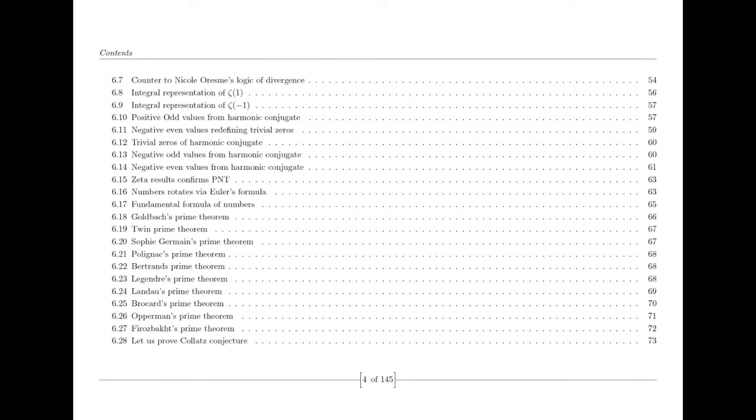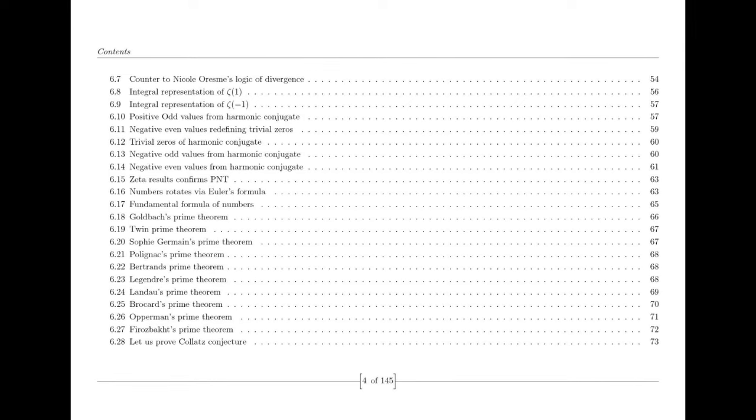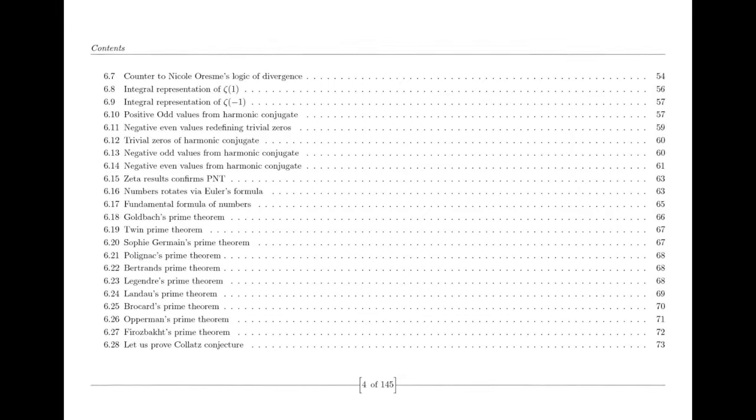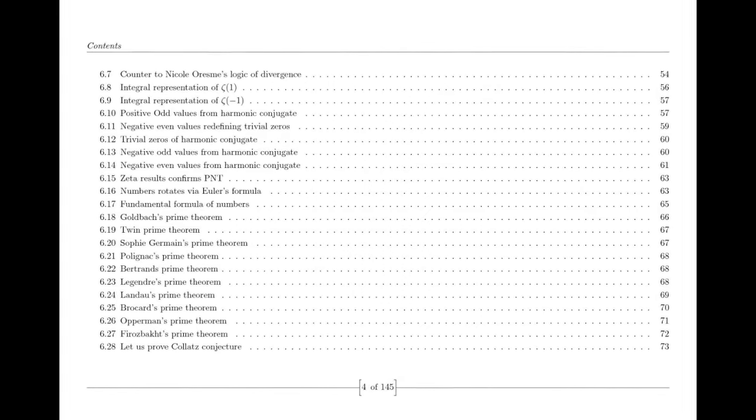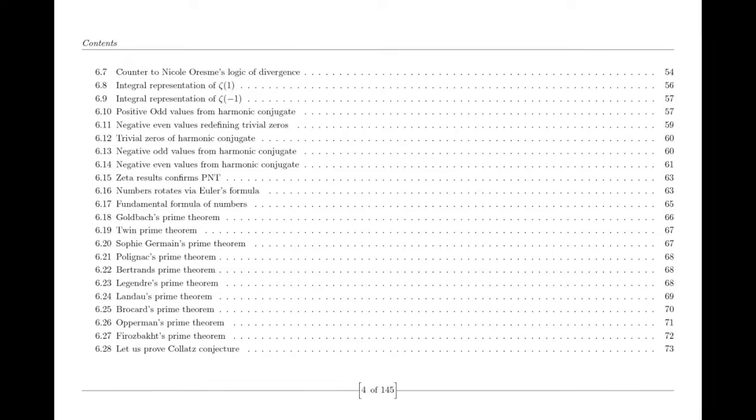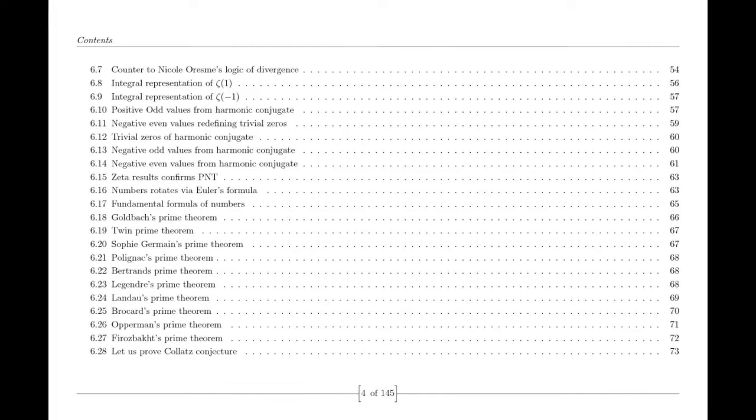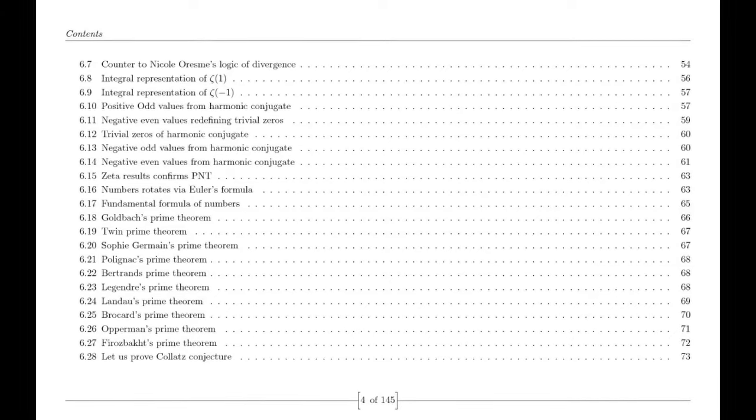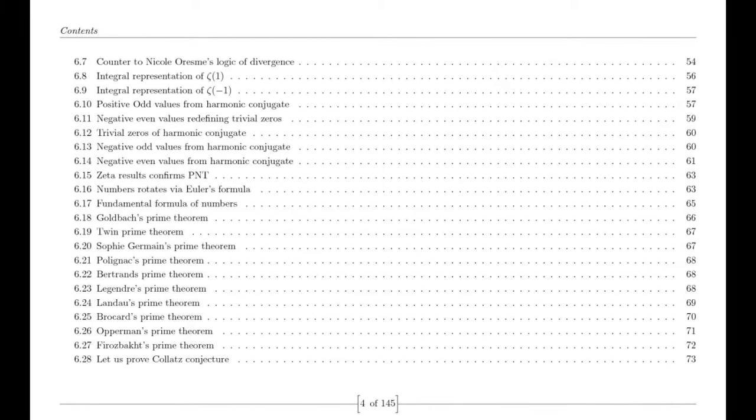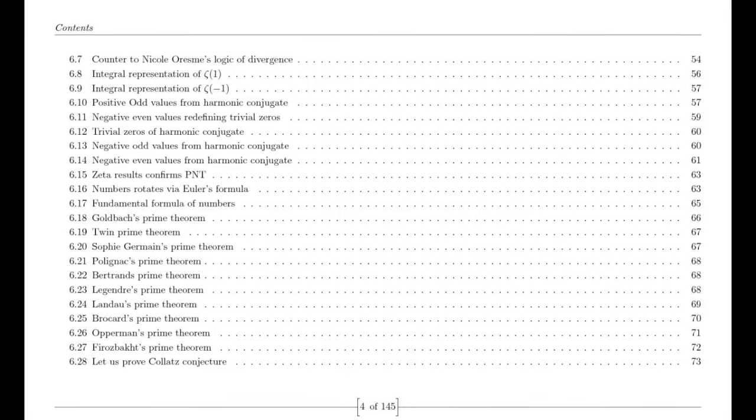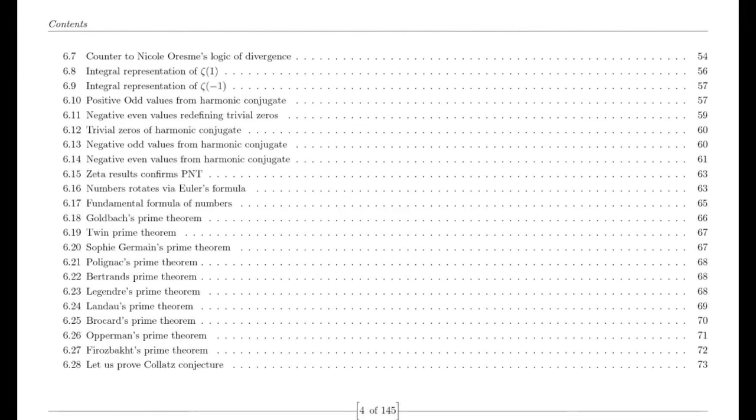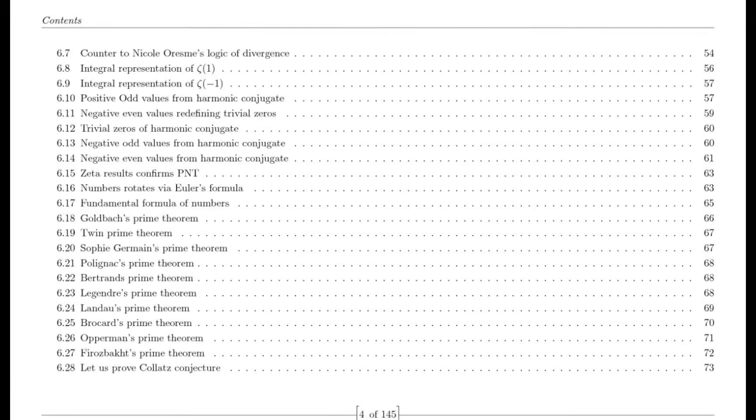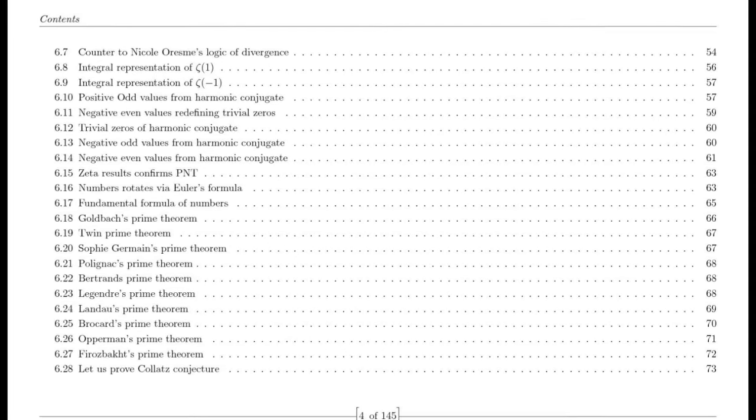The Riemann zeta function is a complex valued function defined for complex numbers s with a real part greater than 1. It is computed by summing the reciprocals of all positive integers raised to the power of minus s, starting from 1 and continuing infinitely. In other words, zeta(s) is expressed as the sum of 1 to the power minus s, plus 2 to the power minus s, plus 3 to the power minus s, and so on, extending to infinity.